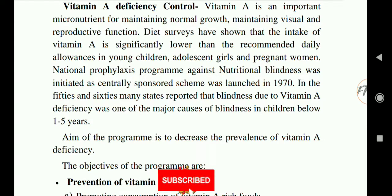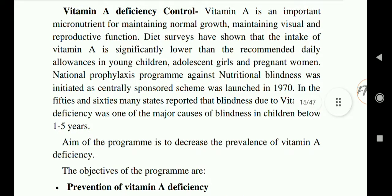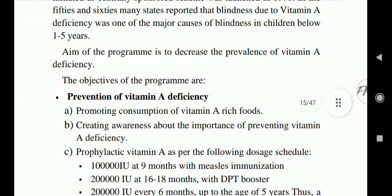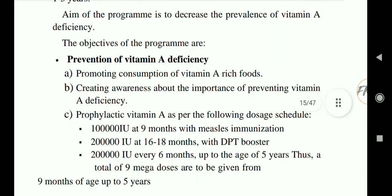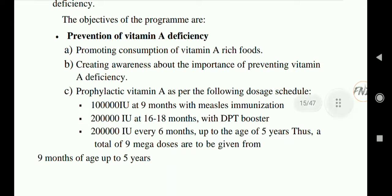The National Programme for Prevention of Blindness was initiated as a centrally sponsored scheme launched in 1970. In the 1950s and 60s, many states reported blindness due to Vitamin A deficiency as one of the major causes of blindness in children. This program aimed to decrease the prevalence of Vitamin A deficiency.